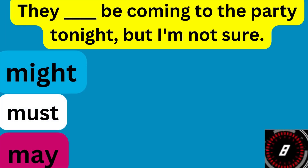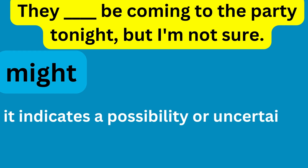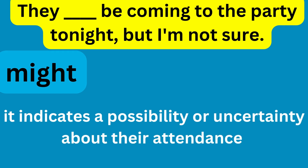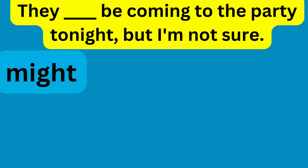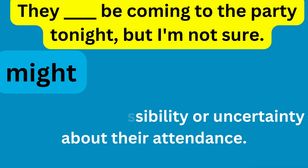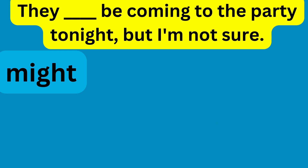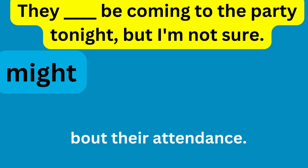They ___ be coming to the party tonight, but I am not sure. They might be coming to the party tonight, but I am not sure. وہ پارٹی کے لیے رات کو آ رہے ہوں گے مگر مجھے یقین نہیں — شاید۔ Might بہت rare chances of possibility کے لیے لگتا ہے۔ May کی نسبت might میں تھوڑا ہلکا امکان ہوتا ہے، اور might دراصل may کی second form ہے۔